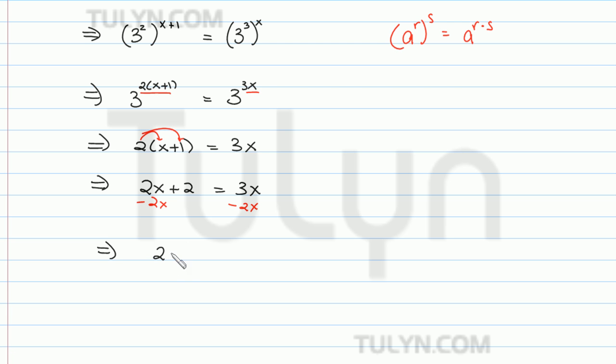So I get 2 is equal to 3x minus 2x. That's just x. So x here is equal to 2.